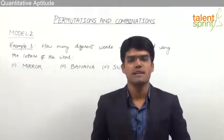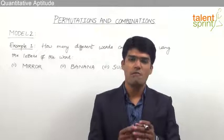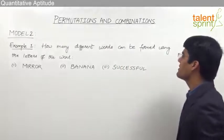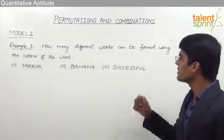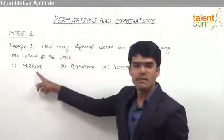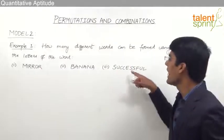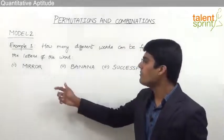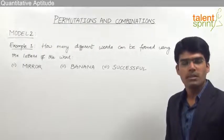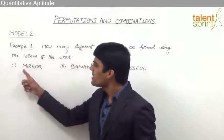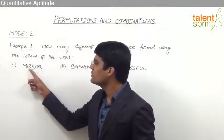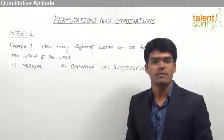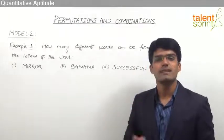Let us now take the first example from model 2, which is based on permutations of similar objects. How many different words can be formed using the letters of the word? Here we have three different words: the first one is mirror, the second is banana, and the third one is successful. We need to find out the number of words which can be formed using the letters of each of these words. In the first word, mirror, we have got total six letters. In general, when there are six letters we know the answer should be six factorial, but six unique letters have to be present.